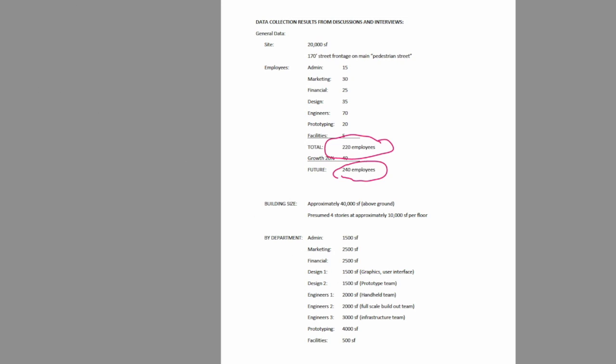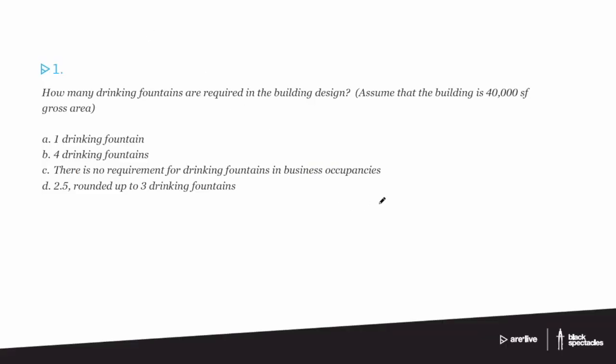We're going to jump back to the actual questions. The first question is: how many drinking fountains are required in the building design, assuming the building is 40,000 square feet? The possible answers are: one drinking fountain; four drinking fountains; there are no requirements for drinking fountains in business occupancies; or 2.5 rounded up to three drinking fountains. One thing I can definitely tell you is it's not C — drinking fountains are almost always required in business occupancies. So we've got to figure out how many drinking fountains are needed.